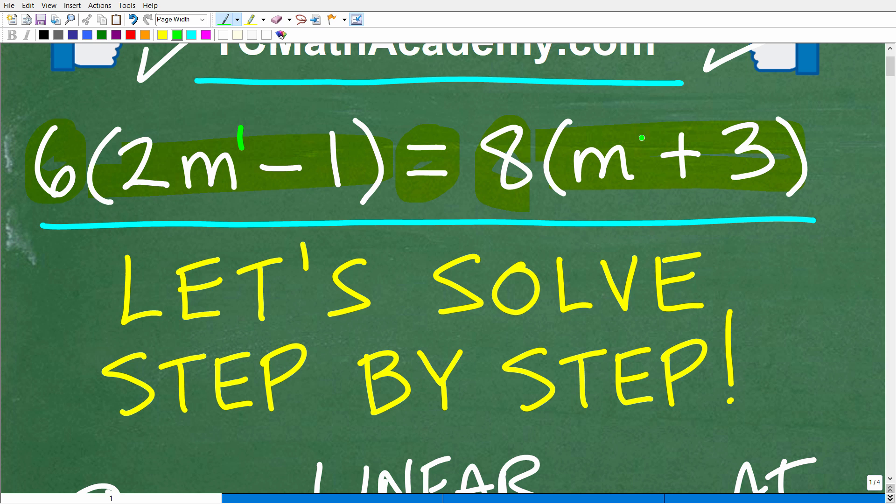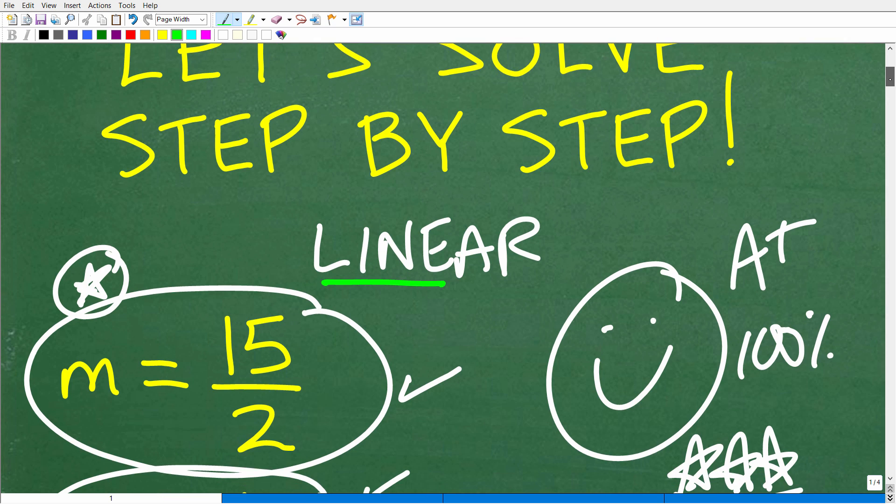We're not dealing with anything like M squared. This would make this a quadratic equation, which is a whole different ball game. So anytime you are dealing with a variable to the first power, it's likely a linear equation.